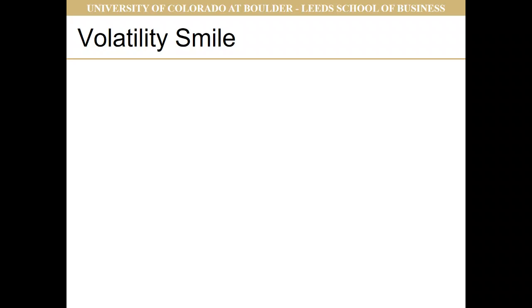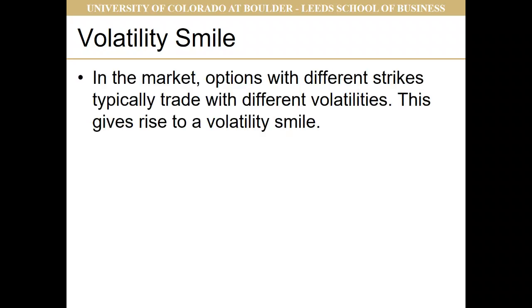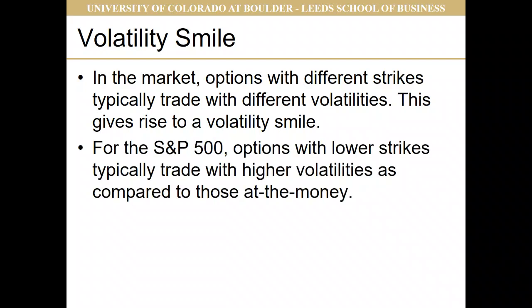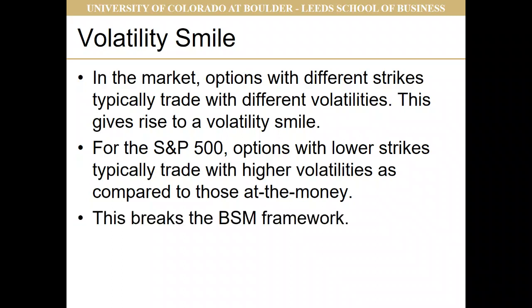One thing we should note is that in the market, options with different strikes typically trade with different implied volatilities, and this gives rise to what we call a volatility smile. For the S&P 500, options with lower strikes typically trade with higher volatilities compared to at-the-money or out-of-the-money strikes. This breaks the Black-Scholes-Merton framework — we know immediately from the market that BSM cannot be absolutely true. However, the market still finds it a useful tool because it's approximately true, and the deltas used for hedging are reasonable proxies for the deltas one should hedge with in practice.